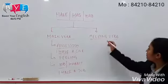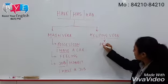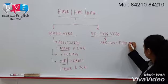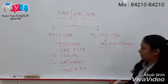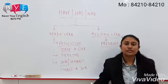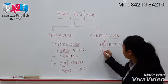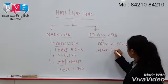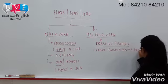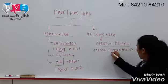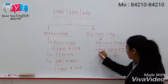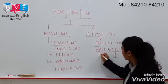As a helping verb, we use verb 'have' in present perfect tense. Present perfect tense is the sentence that describes an action that has recently completed. Like: 'I have completed my project.' In this sentence, we already have a verb 'completed' as a main verb, and 'have' is acting as a helping verb in this sentence.